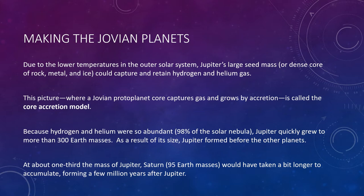Because of their large masses, these planetesimals had gravity strong enough to capture some of the hydrogen and helium gas that made up the vast majority of the surrounding solar nebula. This added gas made their gravity stronger, allowing them to capture more gas. Ultimately, the Jovian planets accreted so much gas that they bore little resemblance to the icy seeds from which they grew.